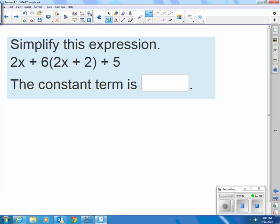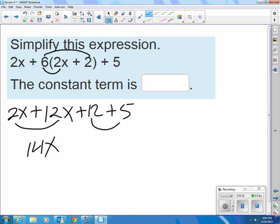Let's simplify this expression. Let's go ahead and multiply 6 times 2x. So that's the same as 12x. And 6 times 2 is 12. So then I'll just bring down the plus 5 and the 2x that I already had. Combine like terms. I have a 12x and a 2x. That's 14x. I have a 12 and a 5. That is 17.